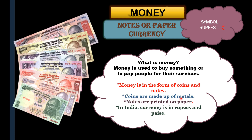Coins are made up of metals – you can see how coins are made up of metals. Notes are printed on paper, and you can see that notes are printed on paper. In India, currency is in rupees and paise. So the two forms of money are: one in the form of paper and the other in the form of metal. In India the currency is in rupees and also in paise.